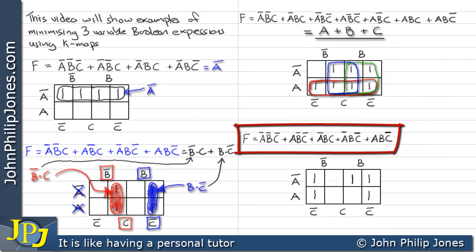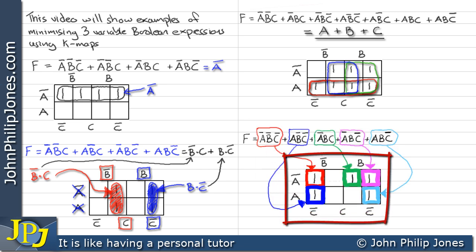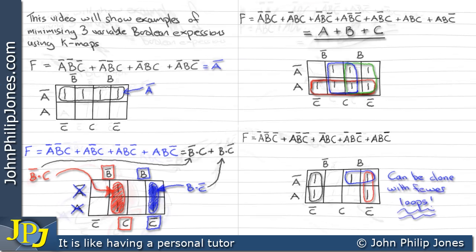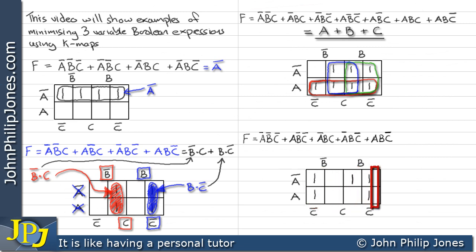Here we can see a sum of minterms and its plot on a three-variable Karnaugh map. The colours show how the plot has been done — pause the video if you wish to check the workings. Now it's a question of looping the ones. There's a loop of two here, another loop of two here, and a final loop of two — but this is not the most efficient way. It can be done with fewer loops. This edge of a Karnaugh map is connected to the other edge because it's actually a cylindrical shape. With that knowledge, this particular loop of four can be made because those cells are actually next to each other. I now need to loop the remaining one, and I can make a loop of two in this case.